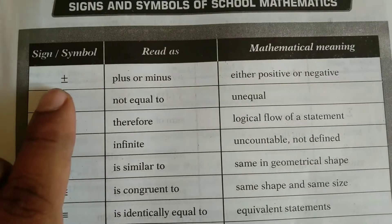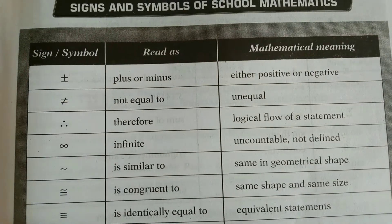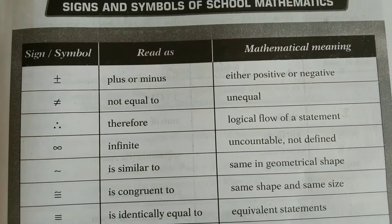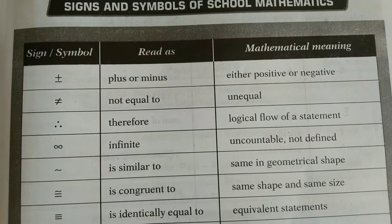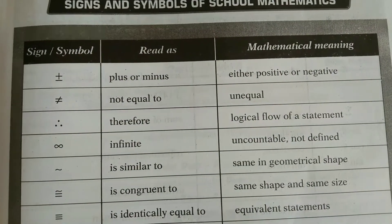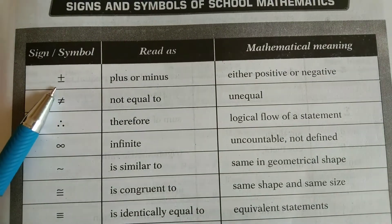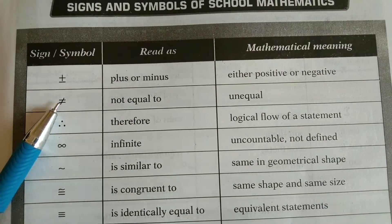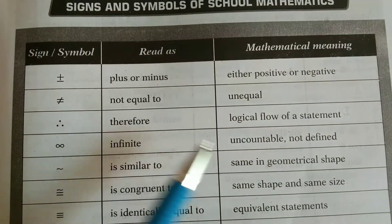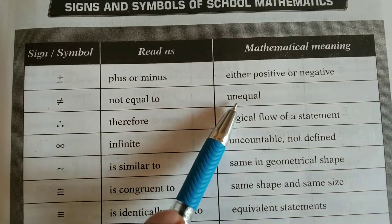Here the sign is plus or minus, read it as plus or minus and what is the mathematical meaning? Here the mathematical meaning is either positive or negative. This is the symbol not equal to. Mathematical meaning is unequal.